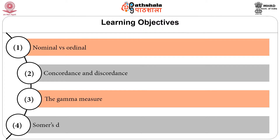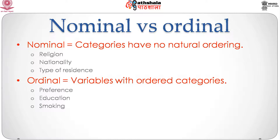In subsequent modules, we shall also consider some further measures such as Somers' D, measures introduced by Kendall, and measures based on alternative concepts. This is the introductory module on ordinal data analysis. I am first going to review the concepts of ordinal data, introduce an ordinal data set, and then a measure called gamma, which is based on two new concepts: concordance and discordance.